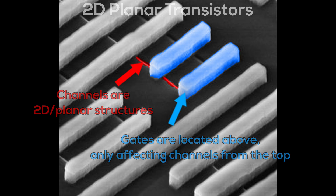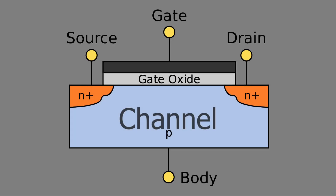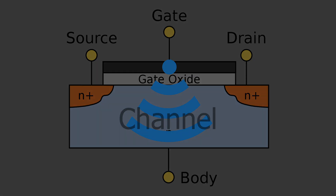But as transistors got smaller and smaller, source and drain got closer and closer, and the gate also became smaller, reducing the amount of control it had over the flow of the current between source and drain. And because field-effect transistors are all about control, losing control was not an option. The physical form of the transistor had to change.